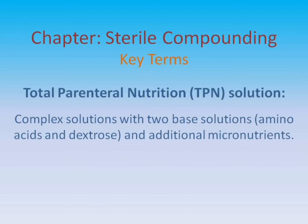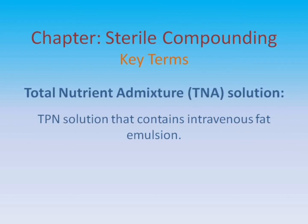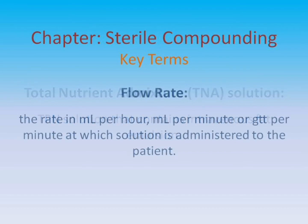Total parenteral nutrition, or TPN solution: complex solutions with two base solutions — amino acids and dextrose — and additional micronutrients. Total nutrient admixture, or TNA solution: a TPN solution that contains intravenous fat emulsion. Flow rate: the rate, in milliliters per hour, milliliters per minute, or drops per minute, at which solution is administered to the patient.